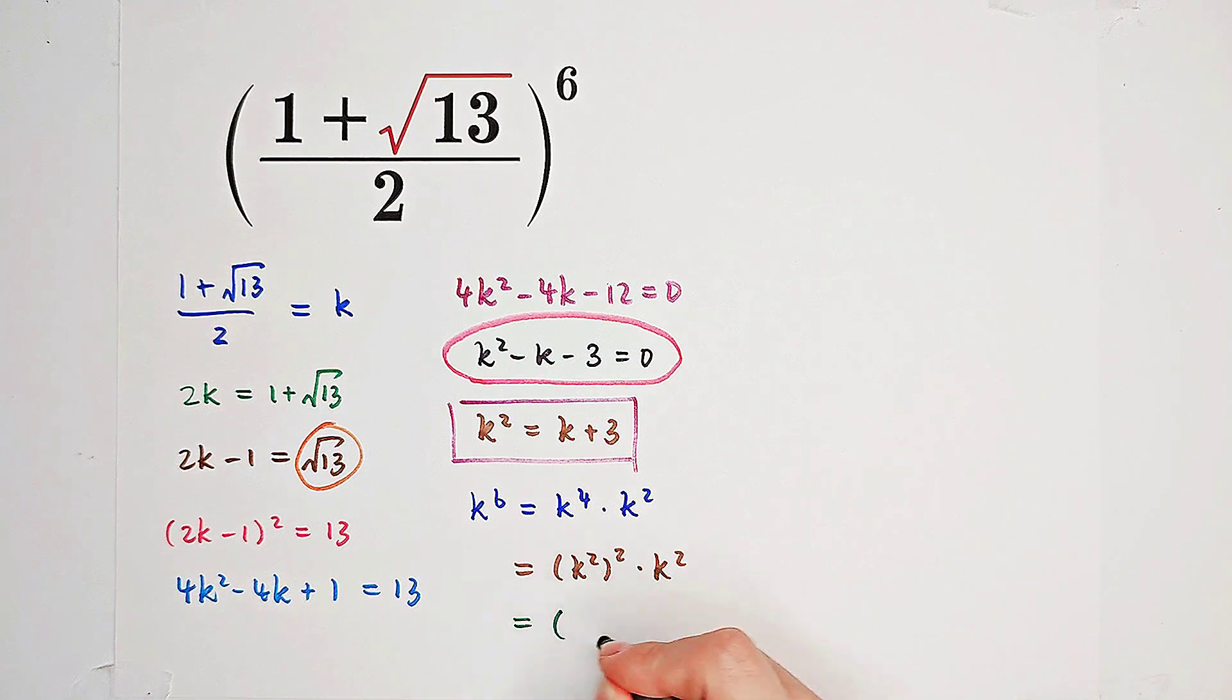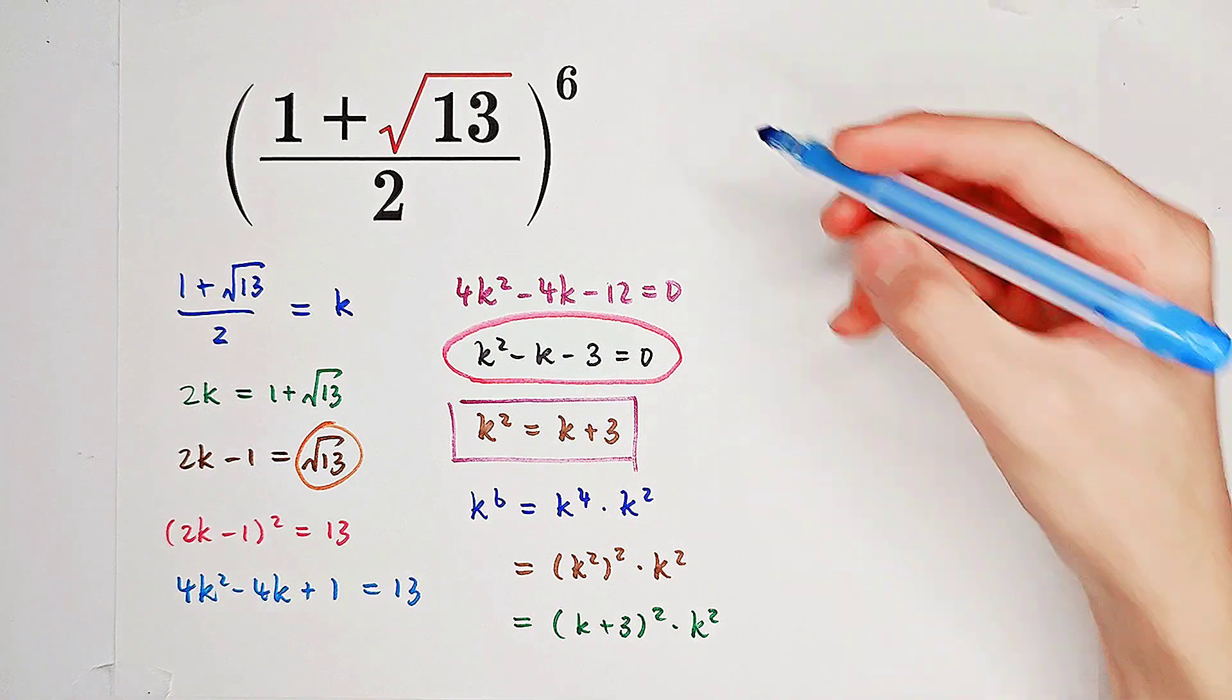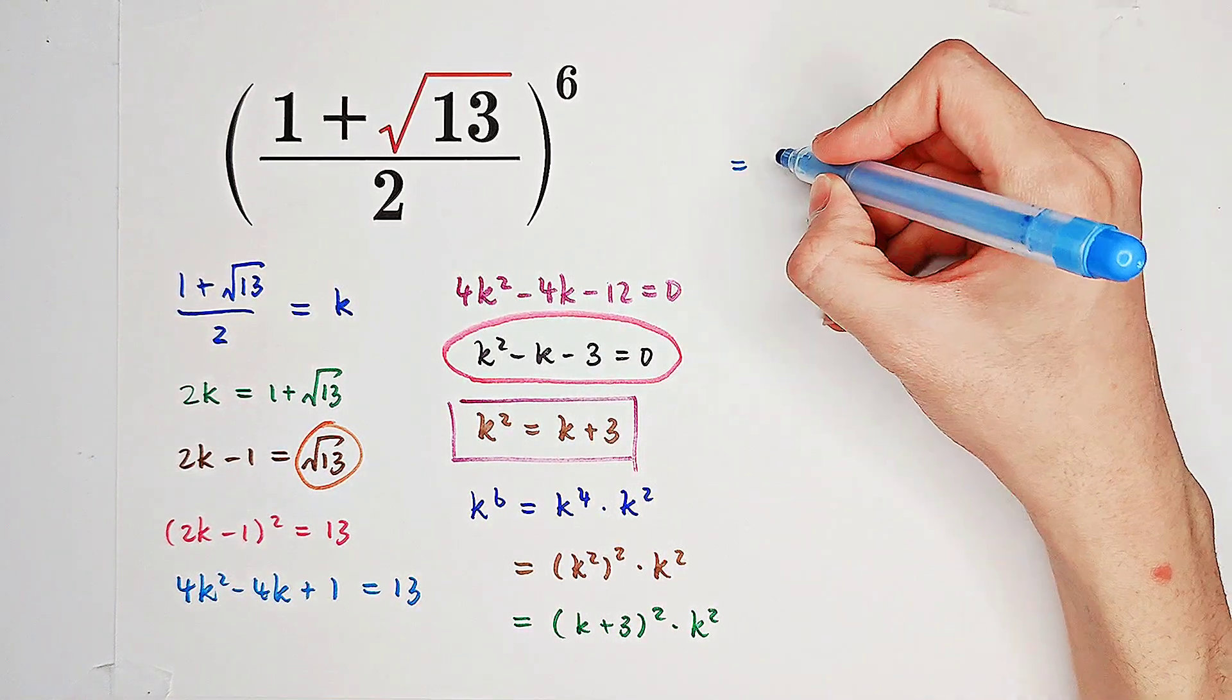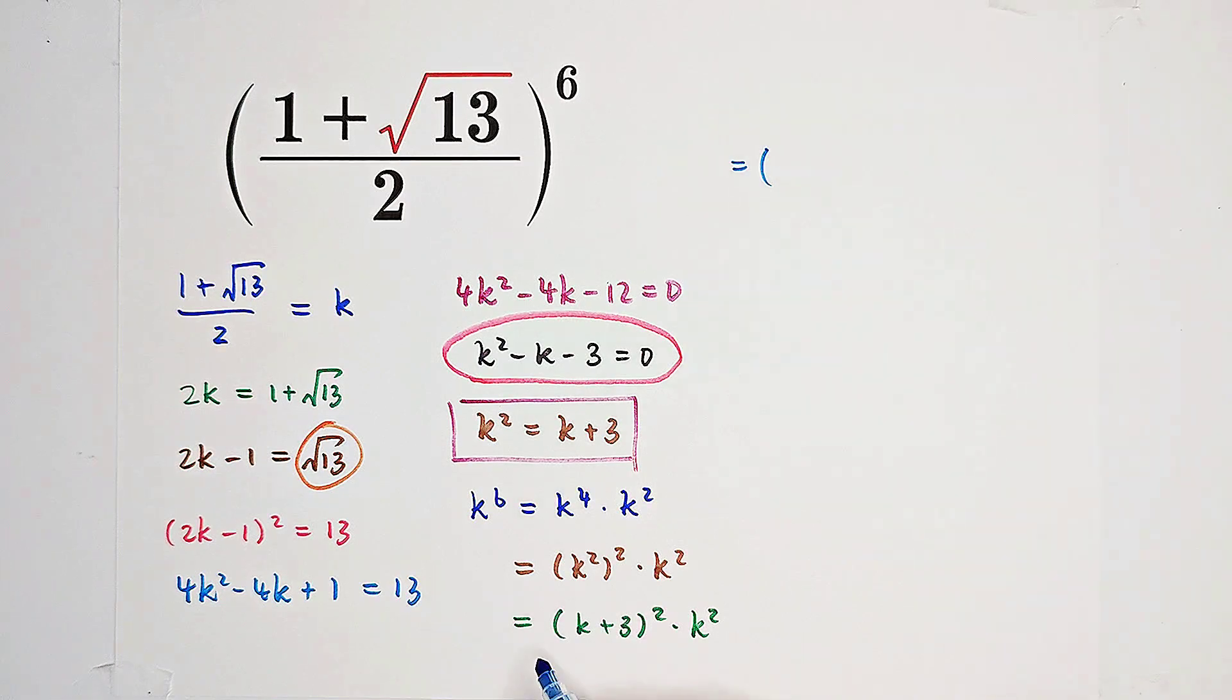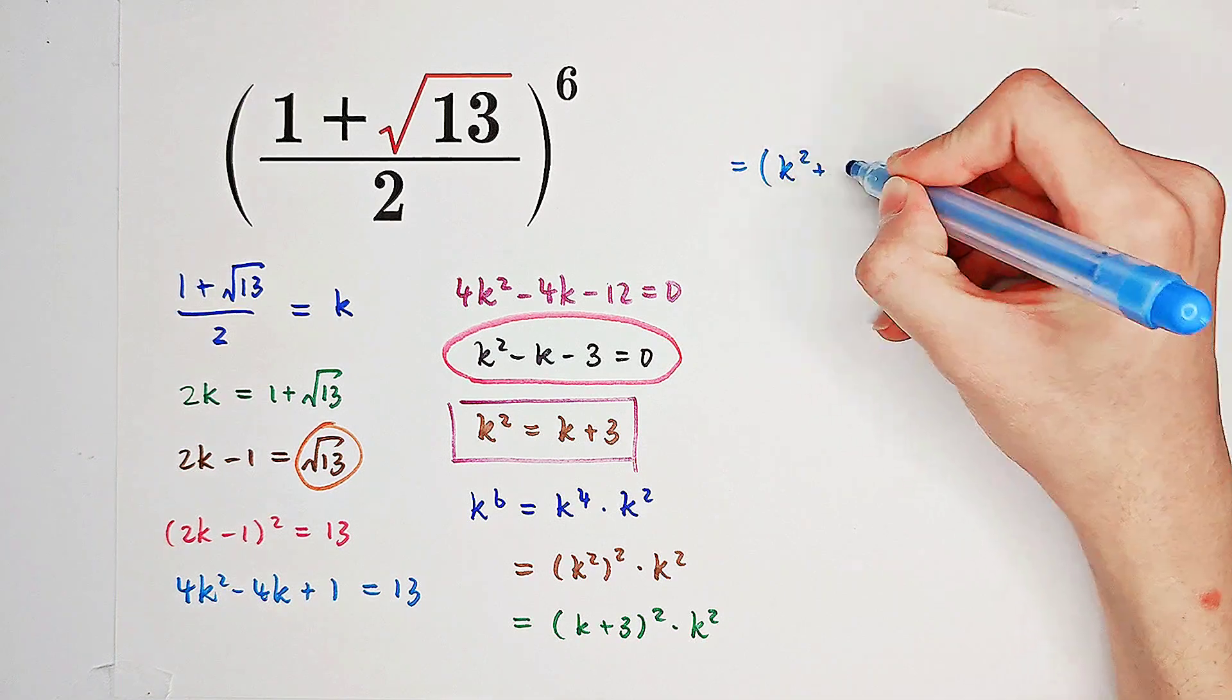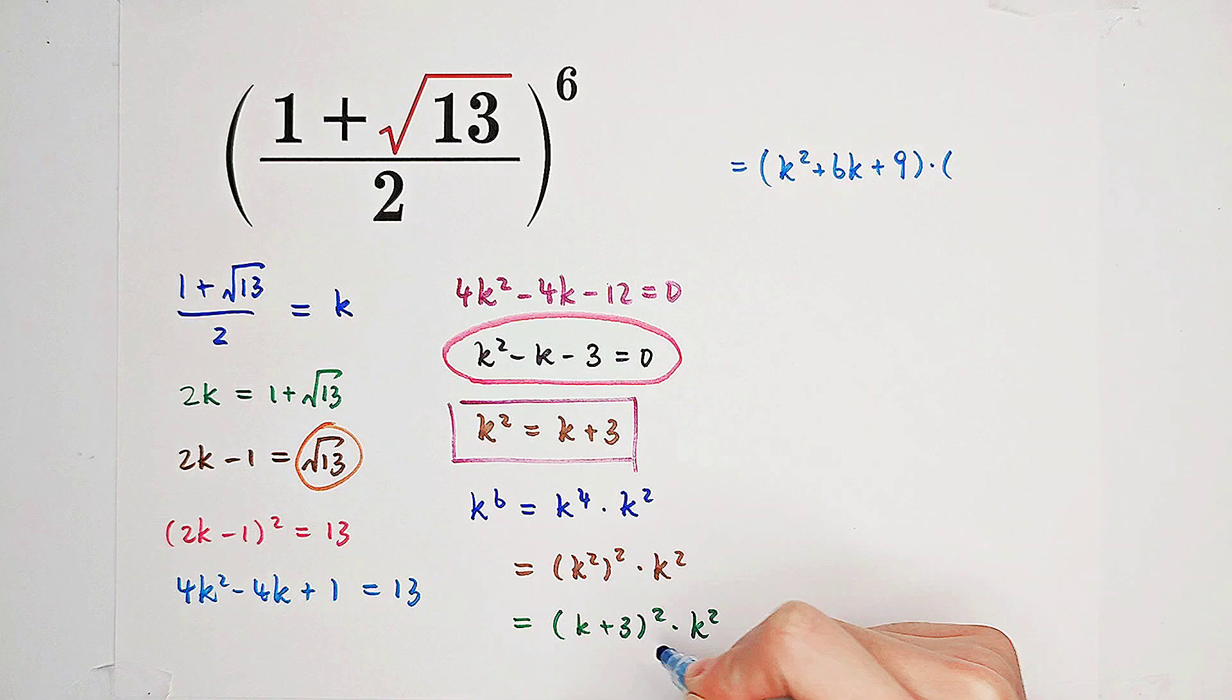Now, because k squared is just k plus 3, so it is k plus 3 all squared times k squared. And we can expand k plus 3 all squared according to the binomial formula. It is k squared plus 6k plus 9, then times k squared.